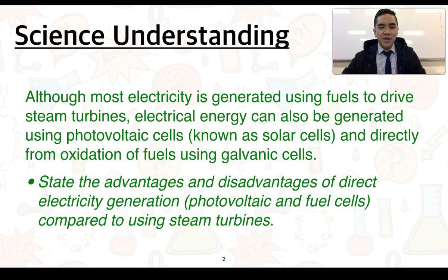Although most electricity is generated using fuels to drive steam turbines, electrical energy can also be generated using photovoltaic cells, known as solar cells, and directly from oxidation of fuels using galvanic cells. State the advantages and disadvantages of direct electricity generation, that's from photovoltaic and fuel cells, compared to using steam turbines.